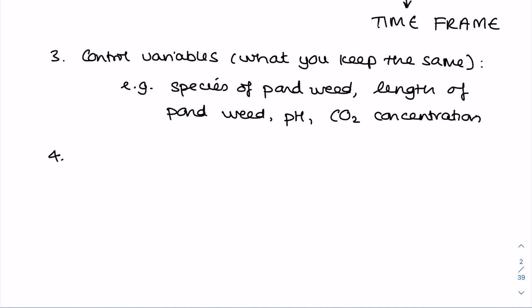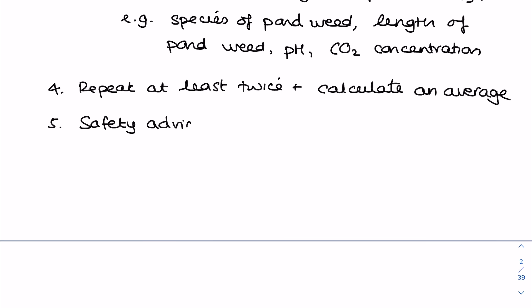Because you want to increase the validity of your experiments, you always want to say repeat at least twice and calculate an average or mean. You want to give some safety advice, e.g. be careful if there is a scalpel involved or acid, because if that sprays in your eyes it's going to be corrosive, so wear safety goggles.